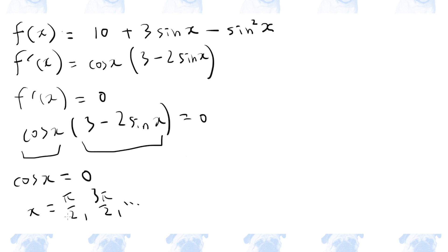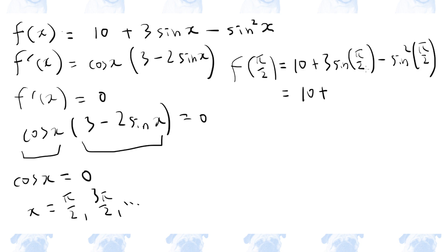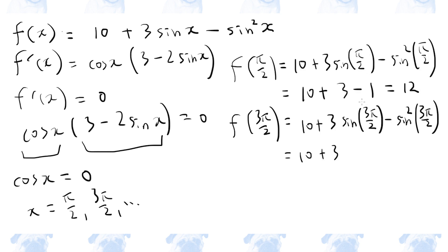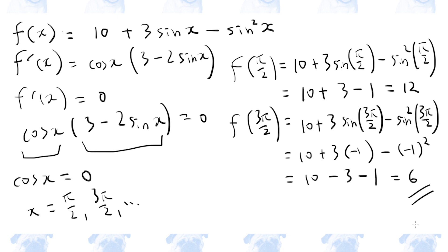So let's see what happens when we substitute these values into f of x. Sine pi over two is one, and sine three pi over two is minus one. So we can see that the maximum value is twelve, whereas the minimum value is six. So six is the answer.